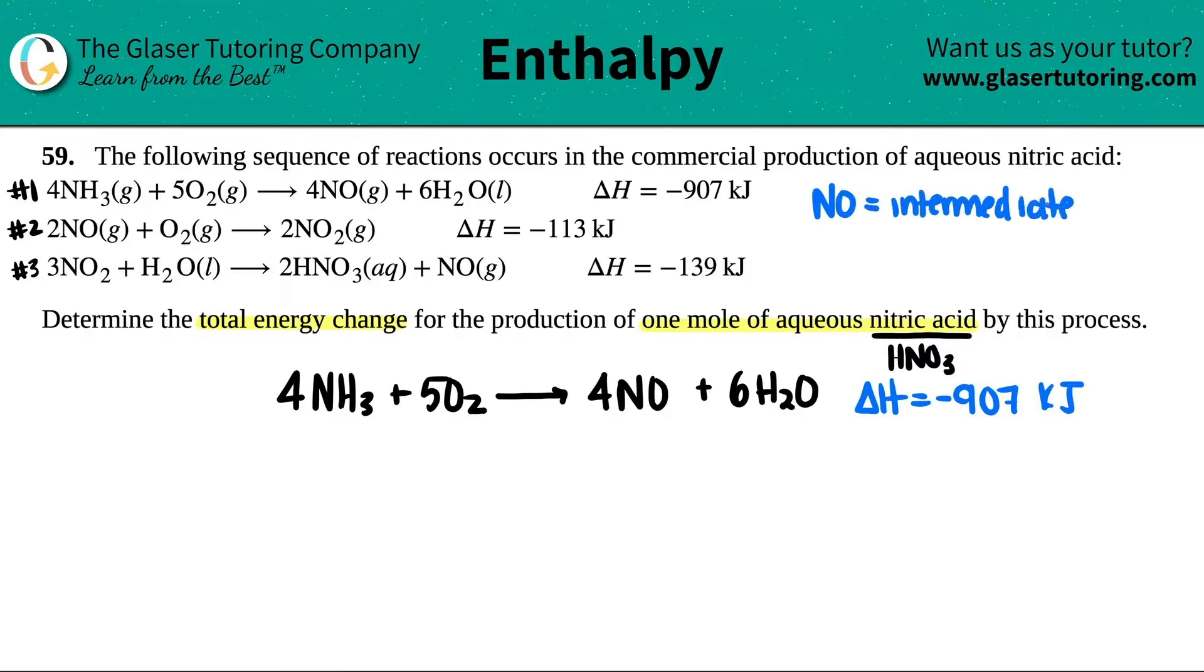Can you tell me what compound shows up on the product side and then shows up again on the reactant side on the second step? Yeah, it's NO. NO, in this case, would be an intermediate. And intermediates from step one to two should be completely taken away. So we have to balance it. We made four NOs. That means we got to get rid of four NOs in the next step. But there's only two here.